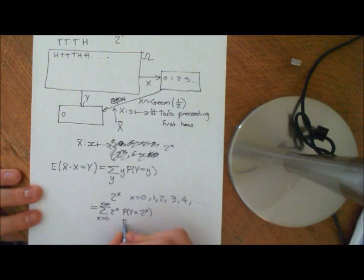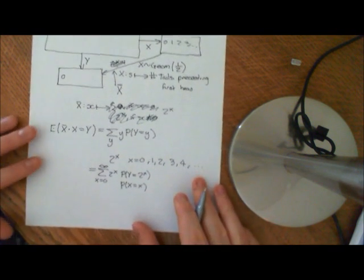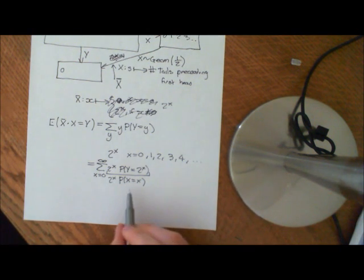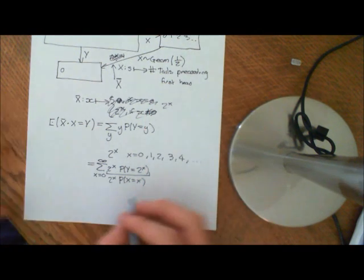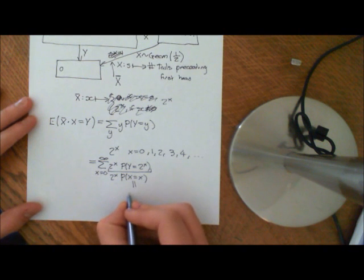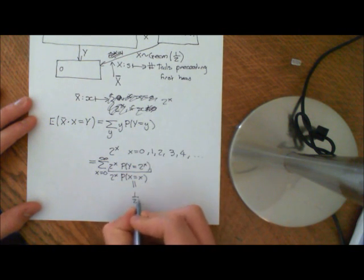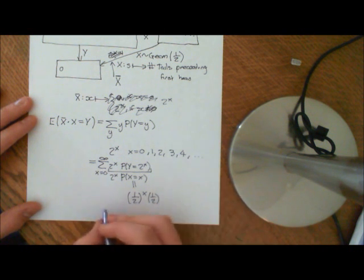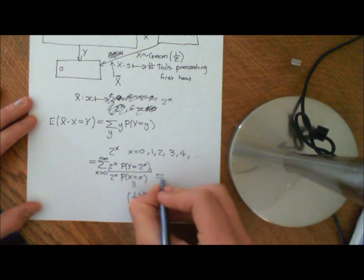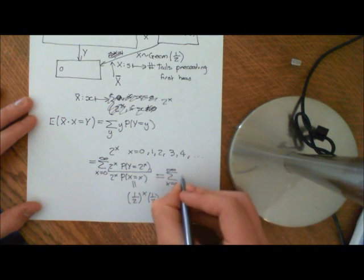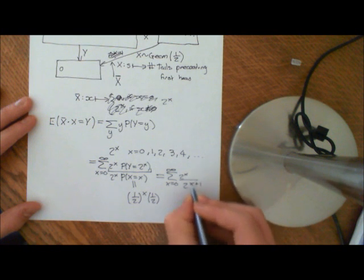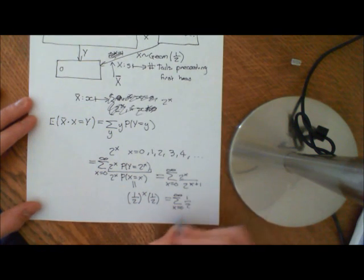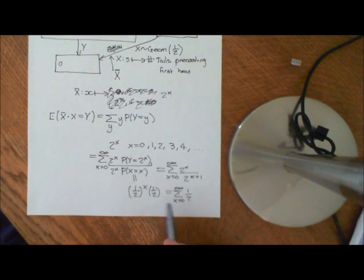The probability that Y equals two to the x is the probability that X equals little x. So we now have it in terms of x: two to the x times the probability that X equals little x. Since X is distributed geometrically, this is the geometric PMF with parameter one half, which gives us one half to the power of x times one half — so one half to the x plus 1. Plugging that in, we get the sum from x equals 0 to infinity of two to the power of x over two to the power of x plus 1, which equals the sum from x equals 0 to infinity of one half. That series is not convergent — it diverges and has no limit. So we write that this equals plus infinity.